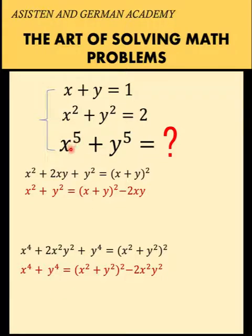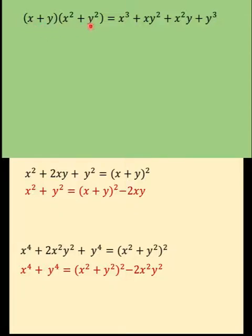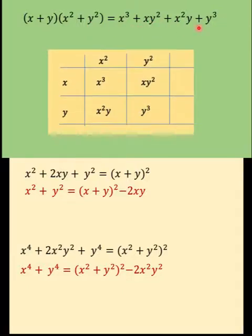Since we want x to the fifth plus y to the fifth, let's look for an identity so that we can represent x to the fifth plus y to the fifth. But let's begin first with x to the third plus y to the third. Let's recall that if we multiply the quantity x plus y times the quantity x squared plus y squared, the result is the expression on the right.